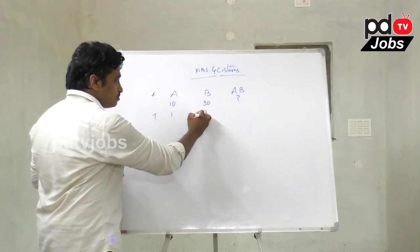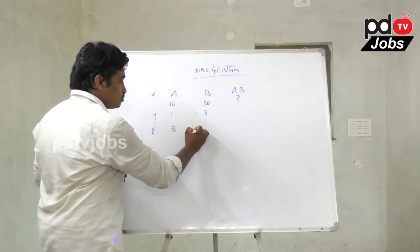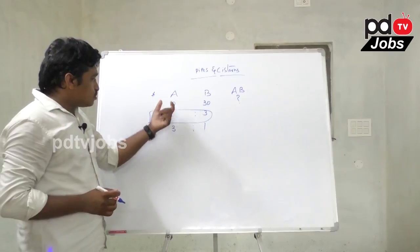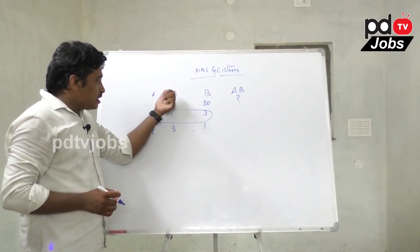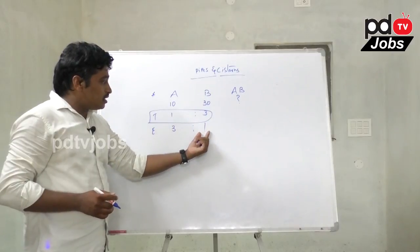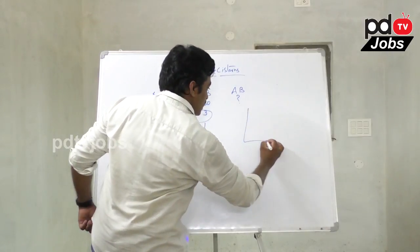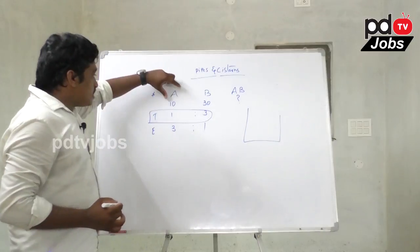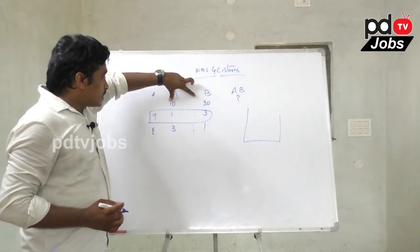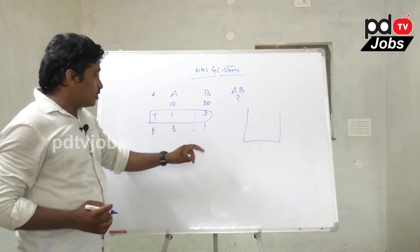The efficiency ratio is 3 to 1. Pipe A fills 3 liters per unit time and pipe B fills 1 liter. The time ratio is 1 to 3, so the efficiency ratio is 3 to 1.